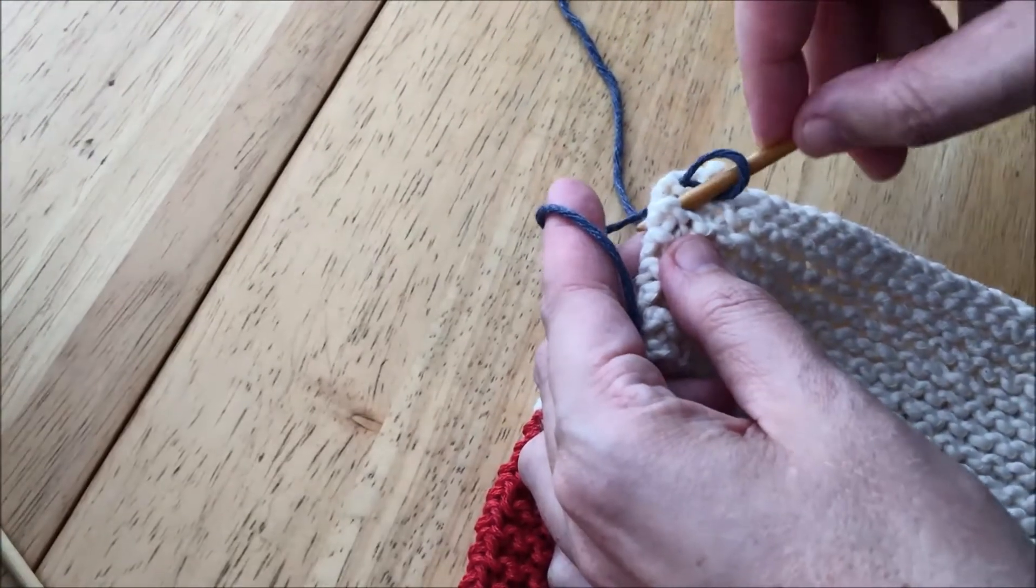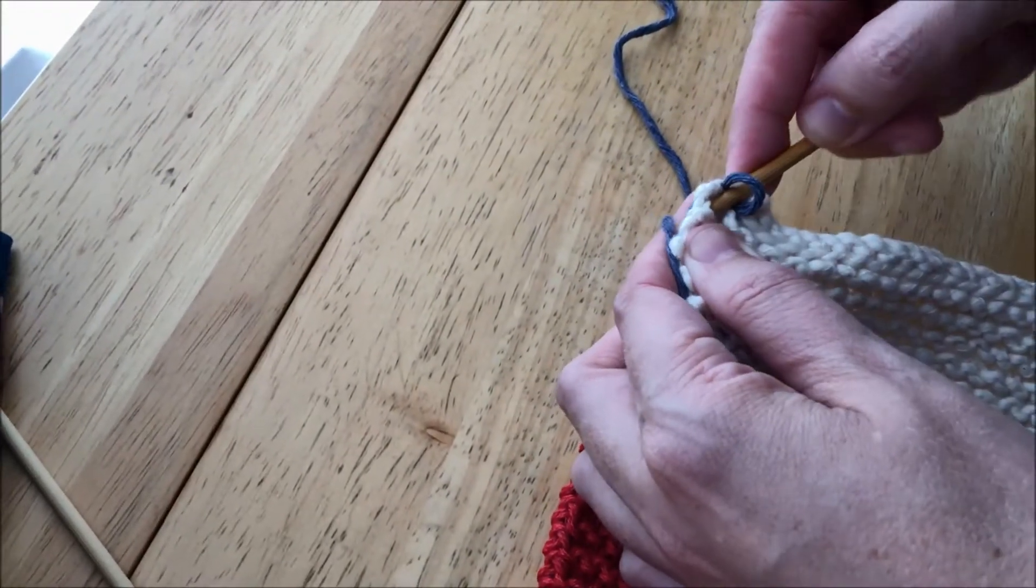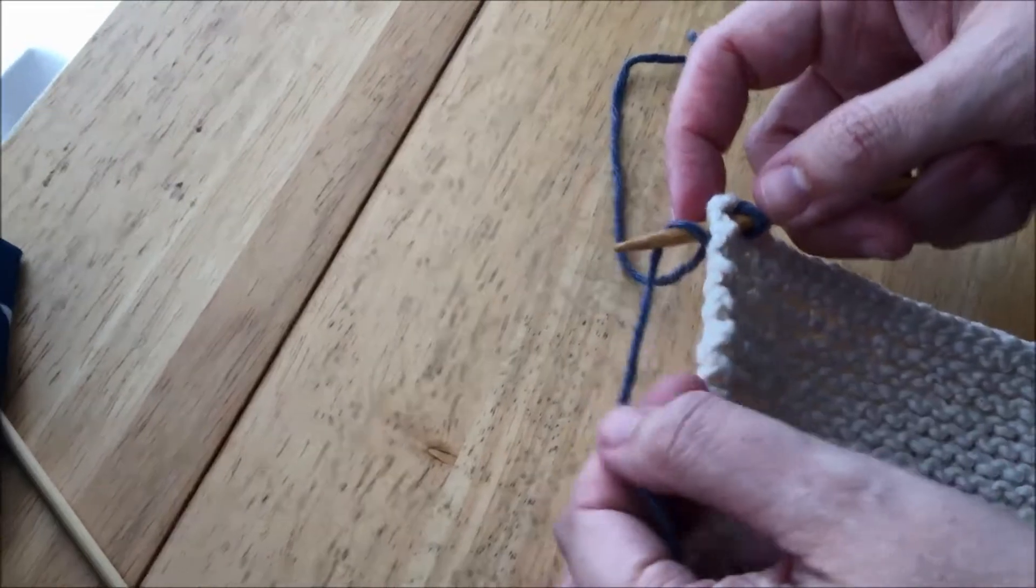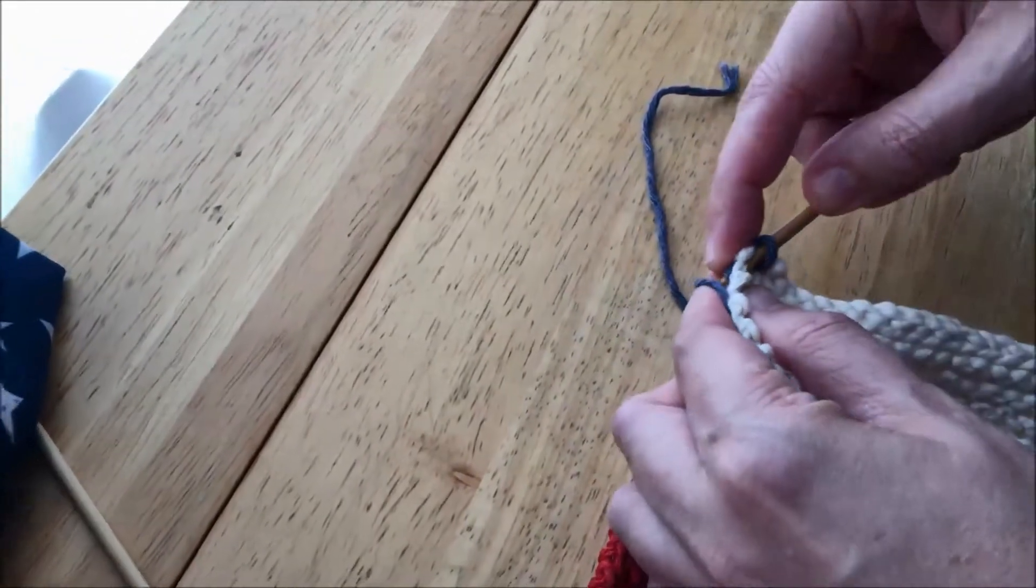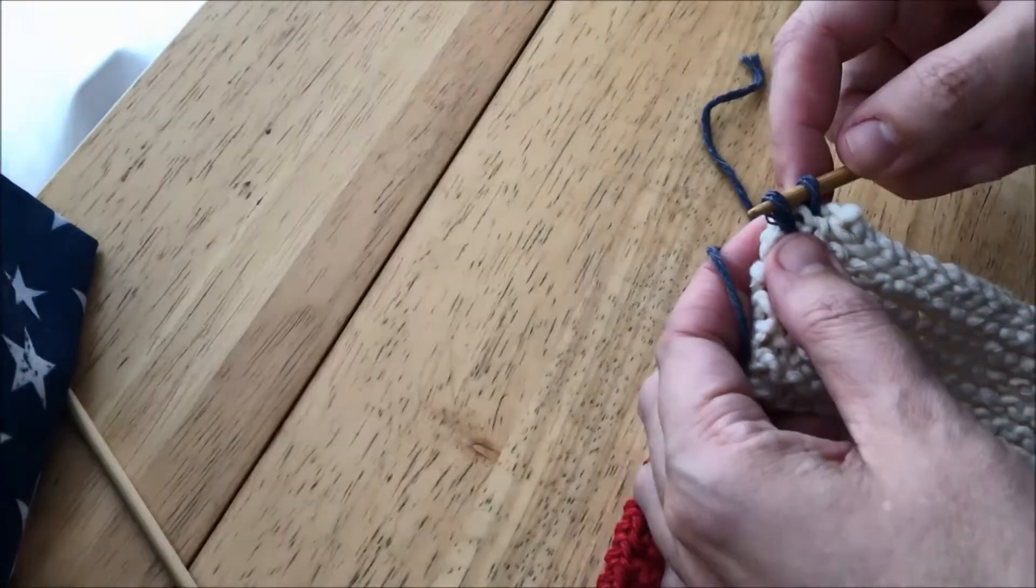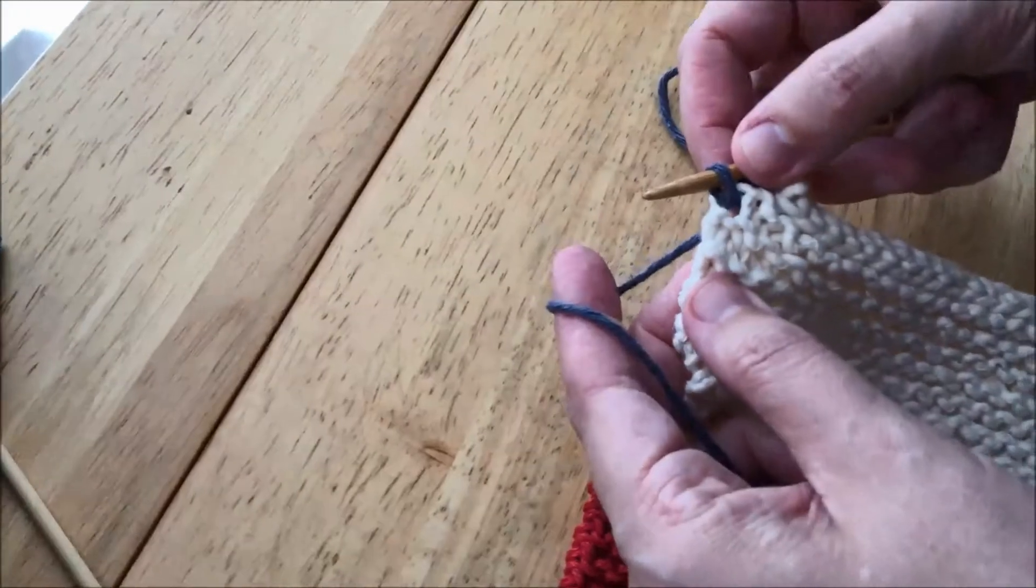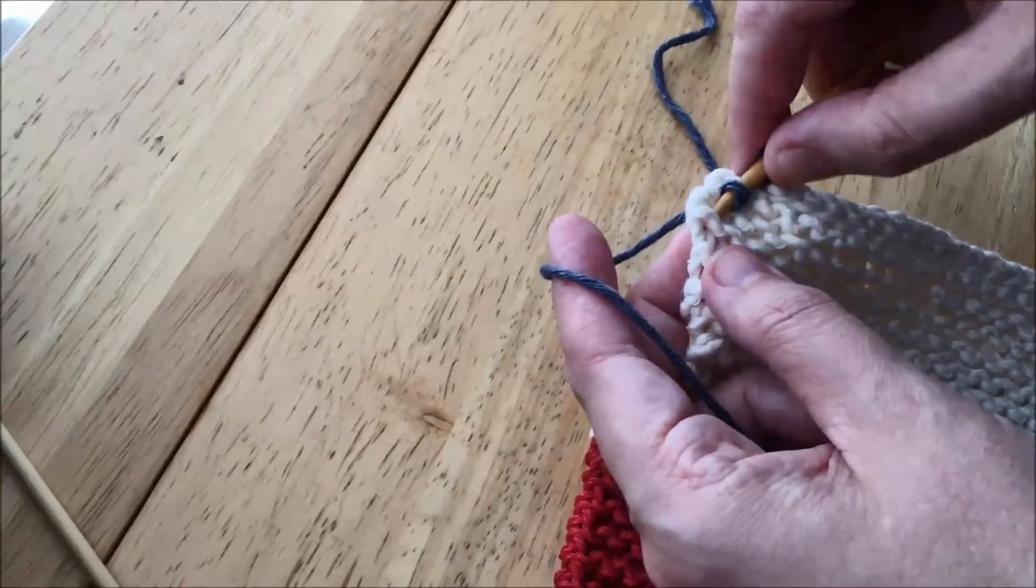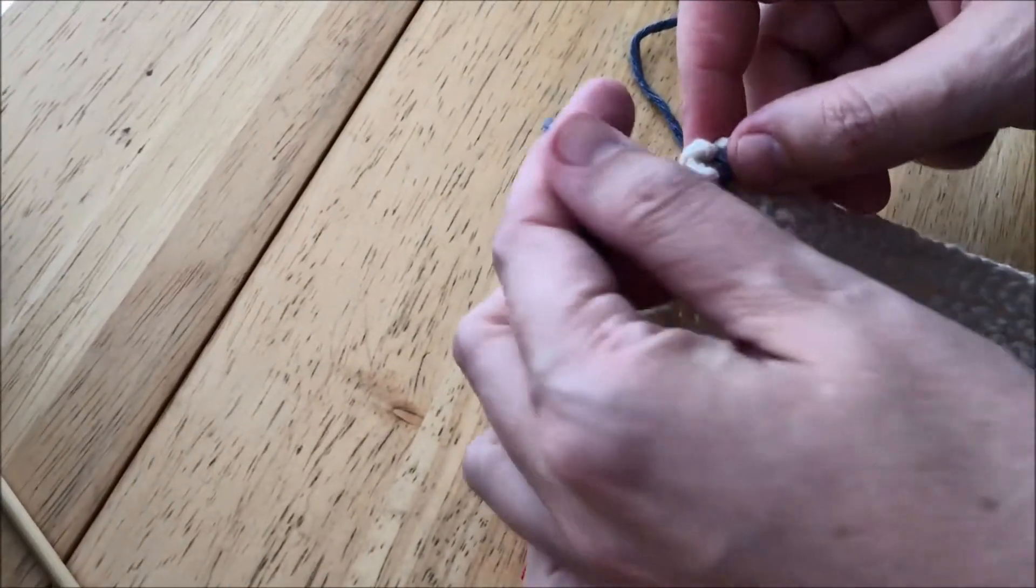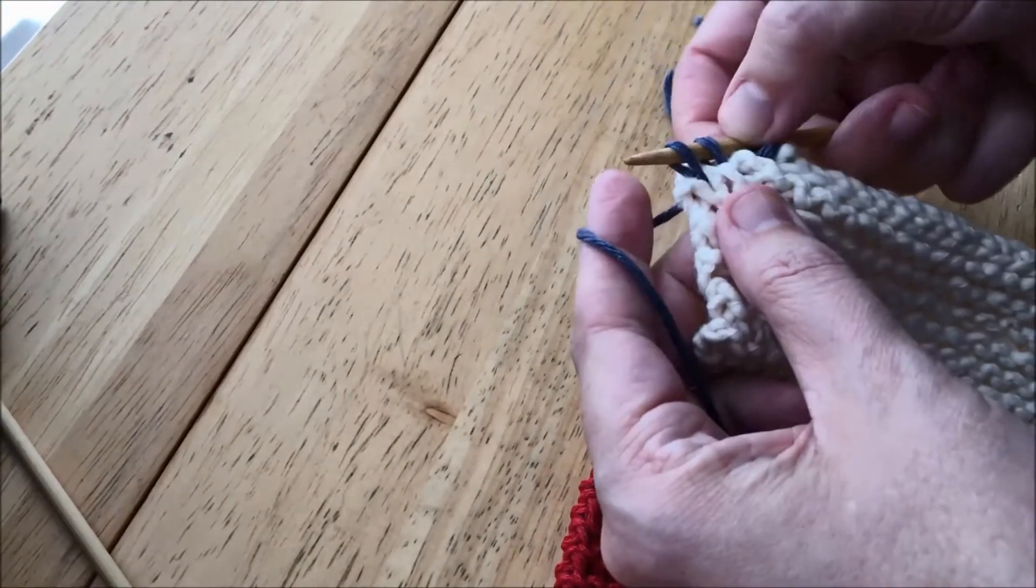Now we're going to go between the next two ridges, wrap the yarn around - oops, I missed it, that happens sometimes - and bring it forward. See how I split the yarn? That's a mistake, so I just poke through so that I've got all the yarn around there. Now we go under the next ridge, wrap around, and bring it forward.